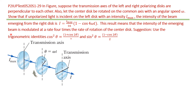Problem 29: In the picture, the transmission axes of the left and the right polarizing disks are perpendicular to each other, so the first and third disks have perpendicular polarizing axes. The center disk is located on the common axis and rotates with an angular speed omega.